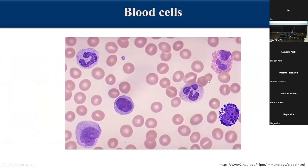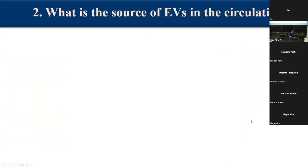In the peripheral blood smear, you recognize red blood cells, platelets, and the different leukocytes: eosinophil granulocyte, neutrophil granulocyte, basophil cell, lymphocyte, and monocyte. And when it comes to the question of which among these blood components is the real source of EVs in the circulation, I would like to start with the so-called intravascular sources.